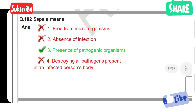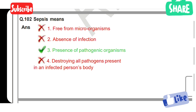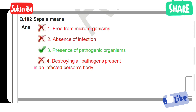Next, sepsis means: Option 1: Free from microorganism. Option 2: Absence of infection. Option 3: Presence of pathogenic organisms. Option 4: Destroying all pathogens present in an infected person's body. Option 3 is the correct answer. Presence of pathogenic organisms is called sepsis.